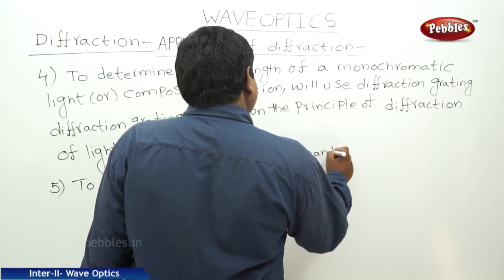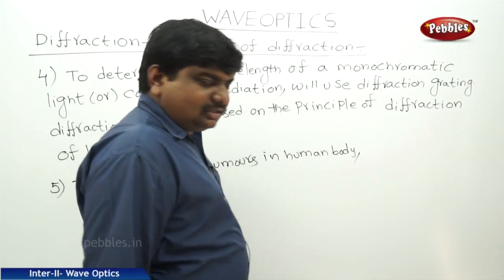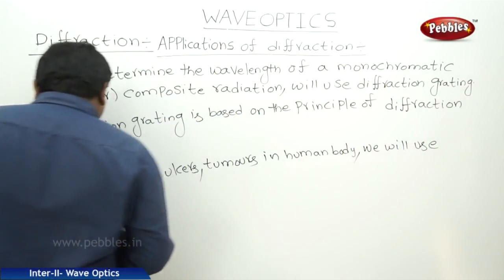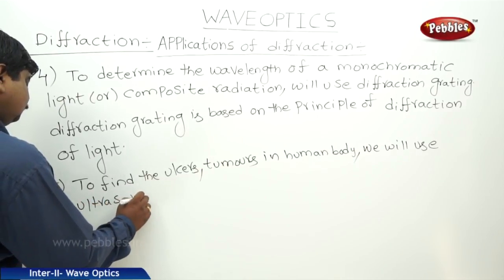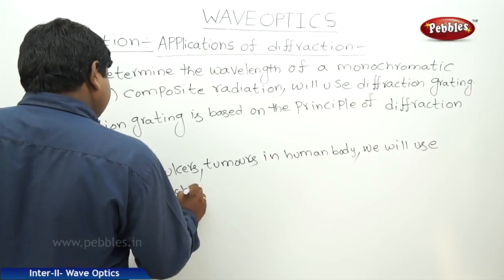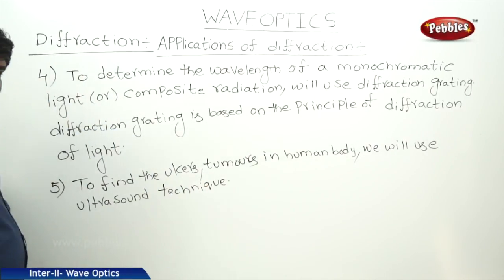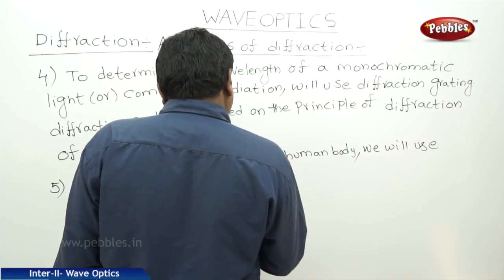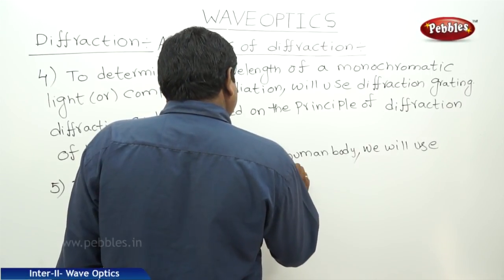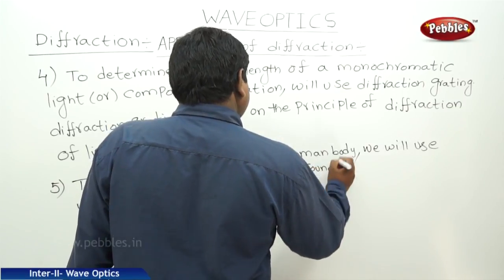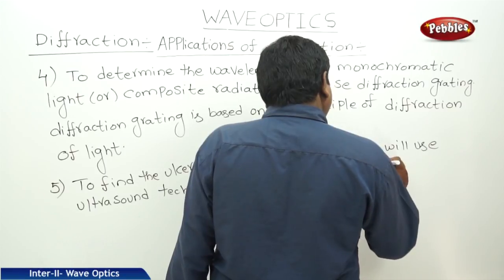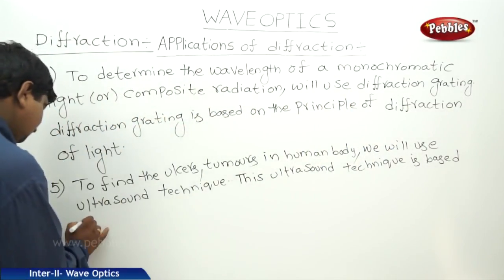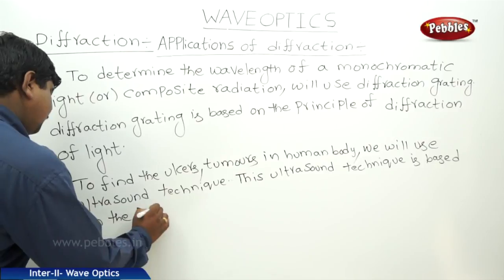We will use the ultrasound technique to find ulcers and tumours in the human body. This ultrasound technique is based on the principle of diffraction.